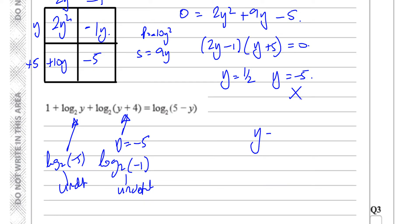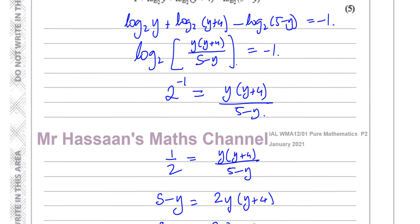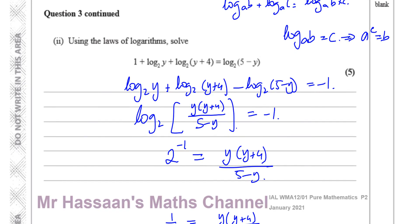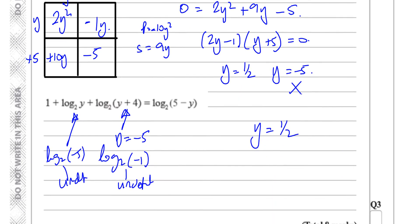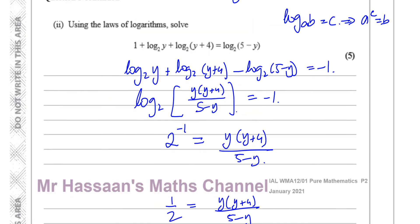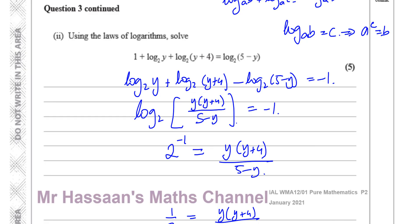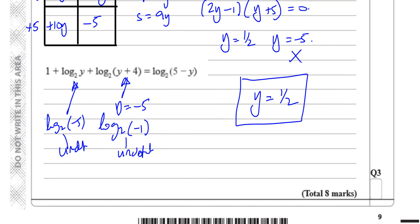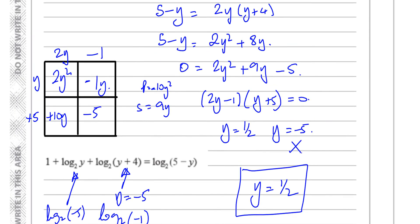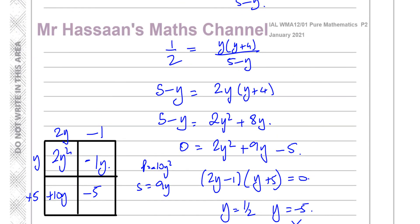So y equals minus 5 is rejected. So there's only one solution, which equals y equals a half. So y equals a half is the only solution that will cause this to be solved. y equals minus 5 will cause this to be undefined, so we have to reject the answer. It's very important for us to understand that. So there's the answer to question number 3. A lot of people lose marks by not excluding this answer, which causes it to be undefined in this topic. That's something you have to know how to deal with.